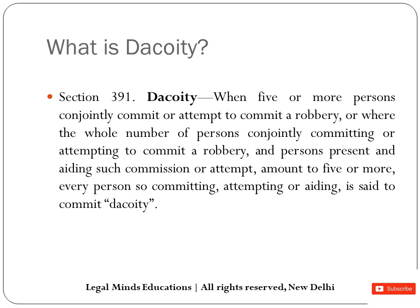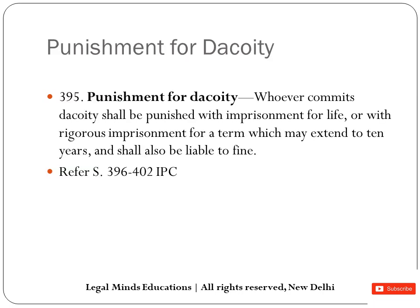Section 395 talks about the punishment. Whoever commits dacoity shall be punished with imprisonment for life, or with rigorous imprisonment for a term which may extend to ten years, and also with fine. So the person may get life imprisonment or imprisonment for ten years with fine.